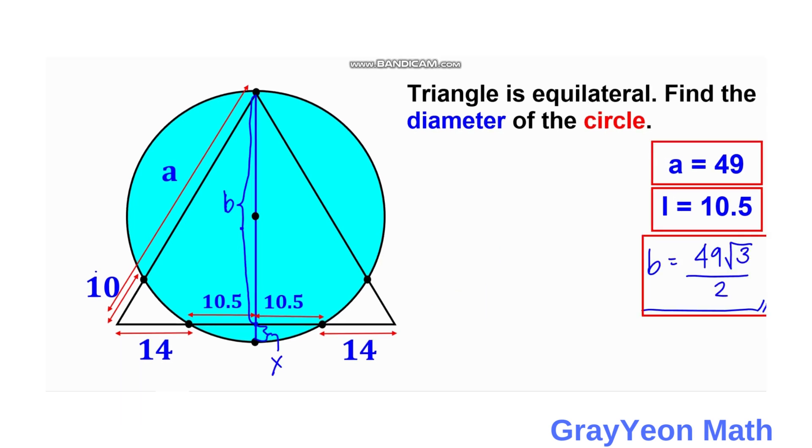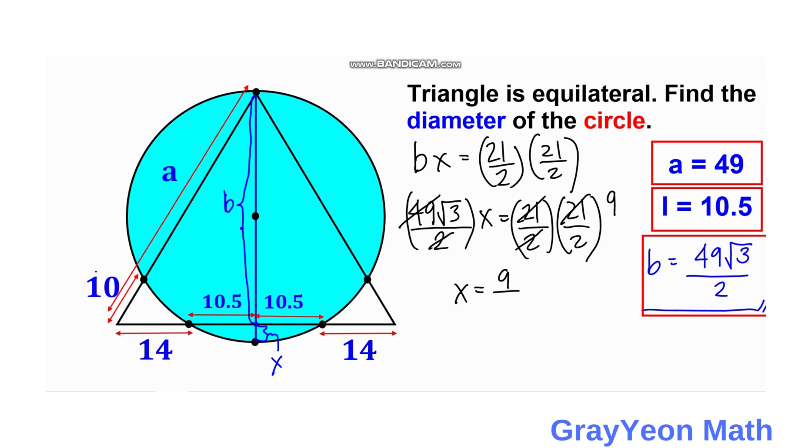Okay, so next is we use intersecting chords theorem. We have B times X is equal to 21 over 2 times 21 over 2. So we have B to have the value of 49 square root of 3 over 2 times X is equal to 21 over 2 times 21 over 2.